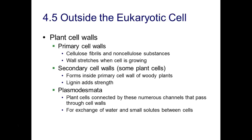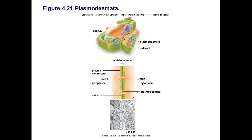Outside of the eukaryotic cell, we can find cell walls — not in animals, but in plants. The primary cell wall is made of cellulose fibrils and also some non-cellulose substances, and the wall stretches when it is growing. Some plant cells also have secondary cell walls that form inside the primary cell wall, and we see this in woody plants — there's a molecule in there called lignin. Plant cells have to communicate with one another despite having cell walls, so they're connected by channels called plasmodesmata. The plasmodesmata allow exchange of water and small solutes between cells, and here you can see these little tunnels connecting two plant cells. They allow cells to share cytoplasm, nutrients, and also hormones — and plants need hormones in order to grow.